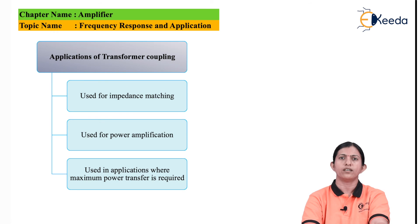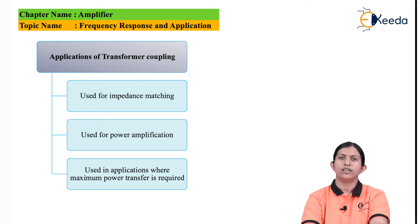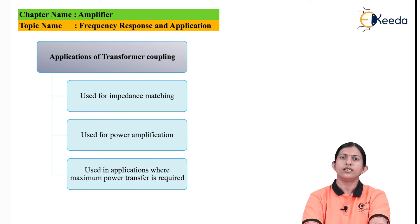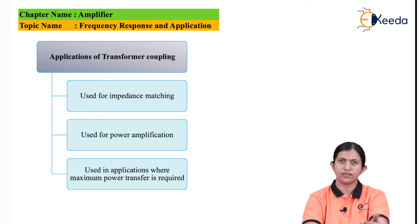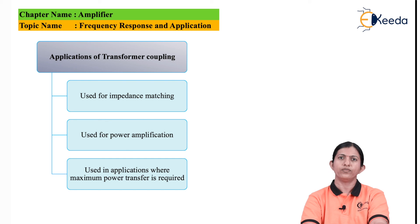The applications of transformer coupling are: it is used for impedance matching, it is used in power amplifiers, and it is used in applications where maximum power transfer is required. Thank you friends for watching this video — stay tuned with eKIDA and subscribe to eKIDA.